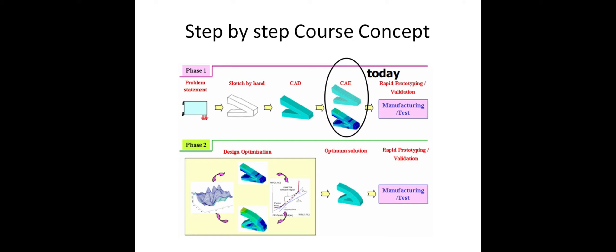After analyzing, we are going to manufacturing. Before that, if any problem is there, we revert back. For example, if a CAD model after analyzing has errors at the modeling point, we go back to modeling, verify it, and send it again to CAE. After finalizing CAE, we send it to manufacturing and testing. This is the general phase one step.